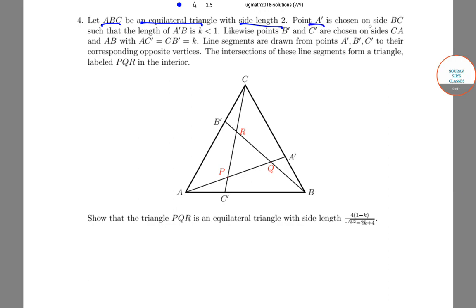Point A' is chosen on side BC such that the length of A'B is k less than 1. Likewise, points B' and C' are chosen on sides CA and AB with AC' = CB' = k.